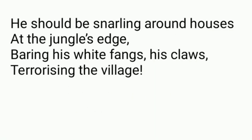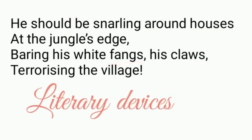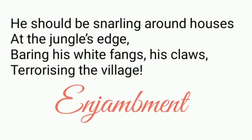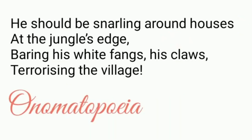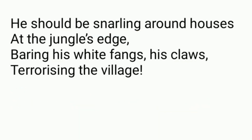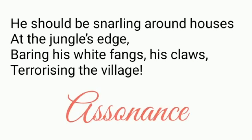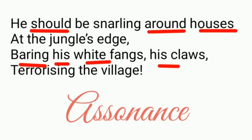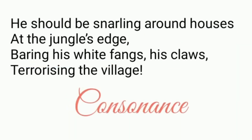Now the third stanza: He should be snarling around houses, at the jungle's edge, baring his white fangs, his claws, terrorizing the village. In this stanza again we have enjambment, with lines continuing to the next without a punctuation mark. We also have onomatopoeia — we can find this in 'snarling.' We can also see assonance: the vowel sound 'o' is repeated in 'should,' 'around,' 'houses,' and the 'i' sound is repeated in 'baring his,' 'white,' 'his claws.' Then we have consonance — the consonant sound 's' is repeated in 'his,' 'fangs,' 'his claws.'